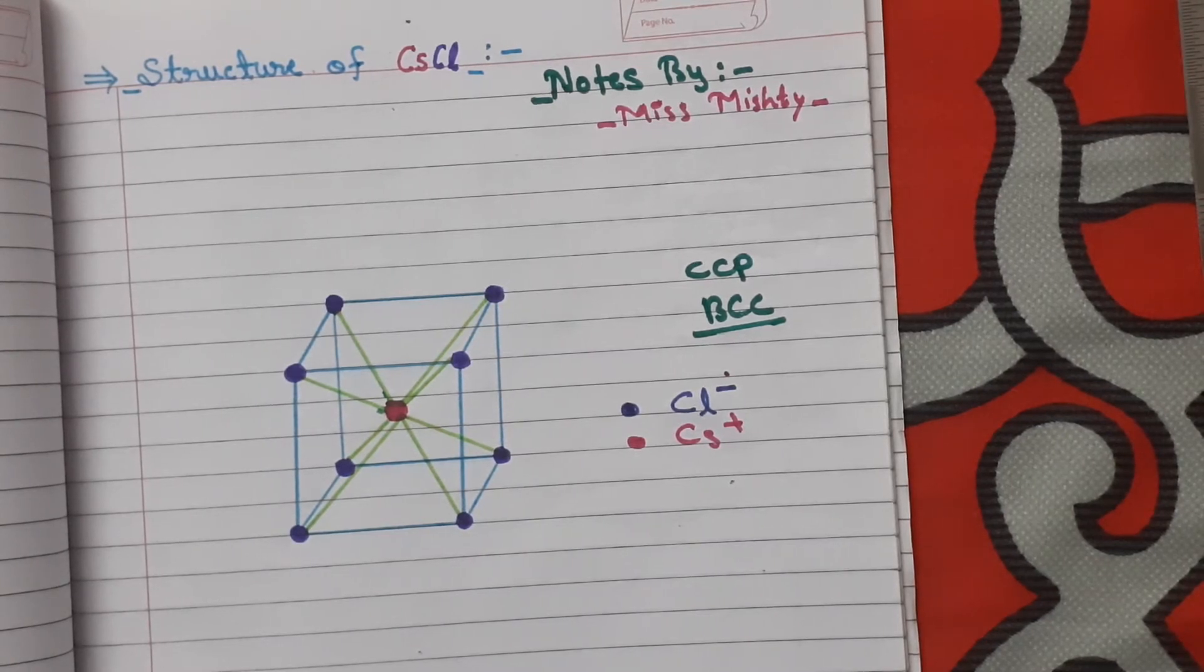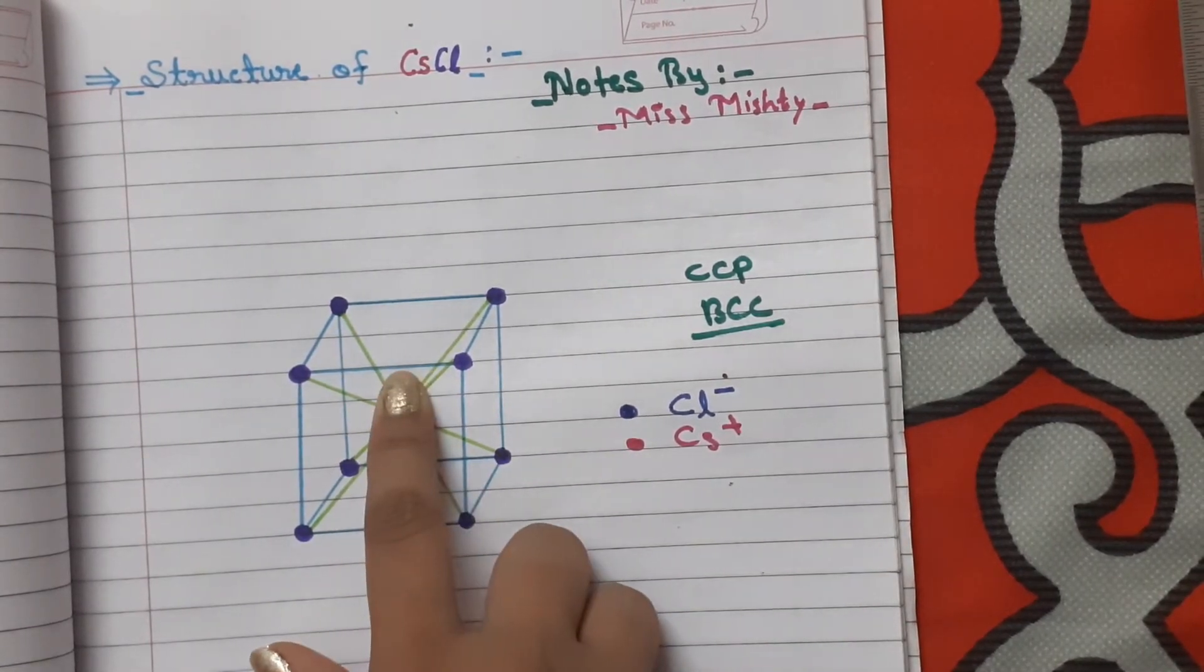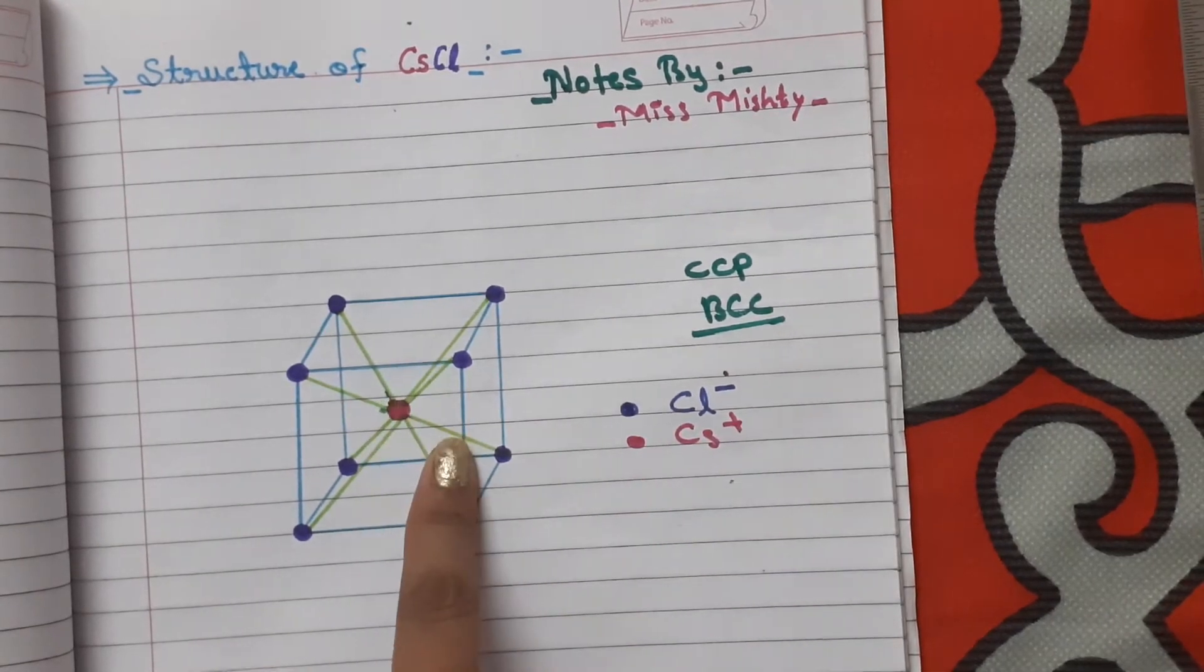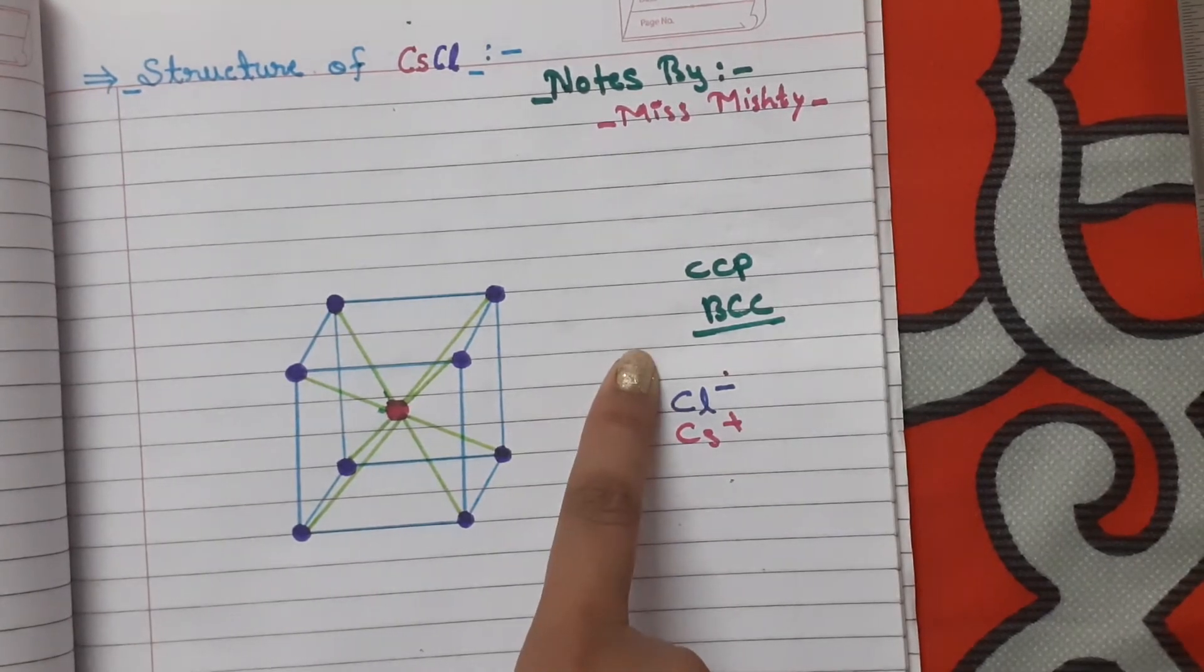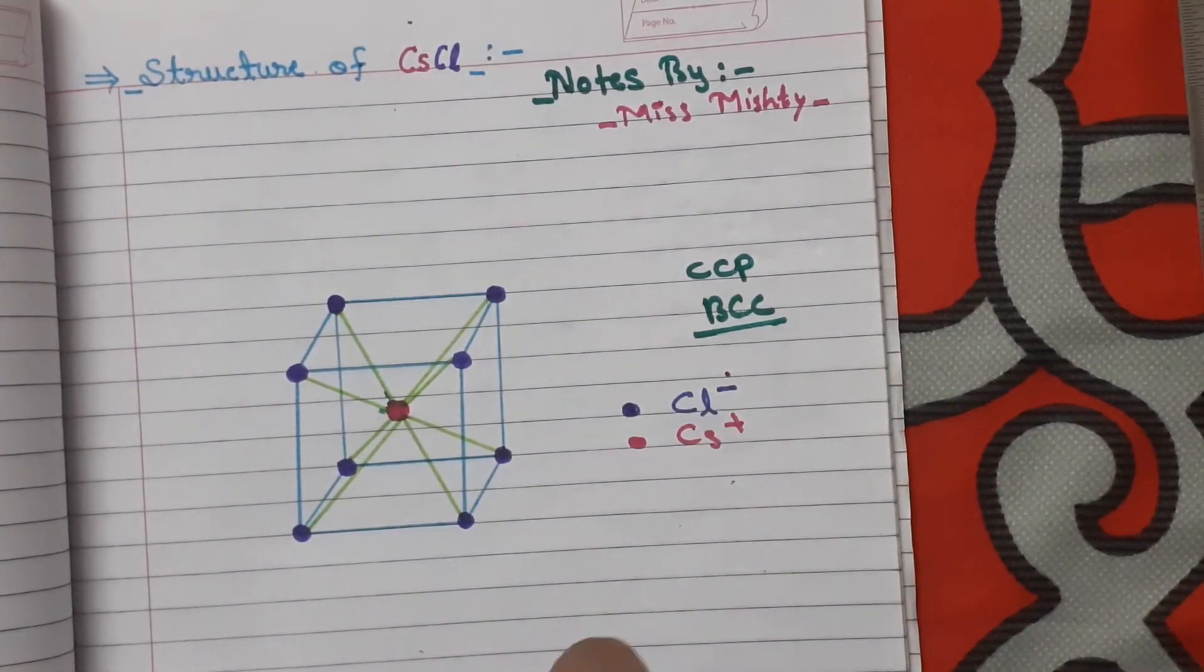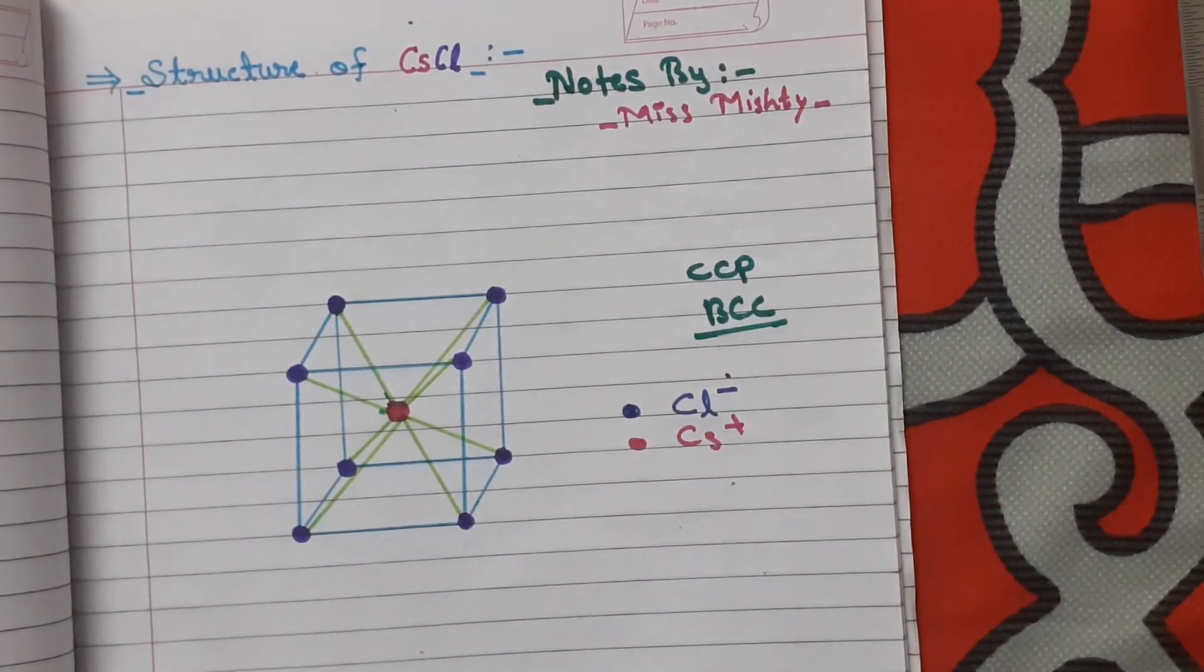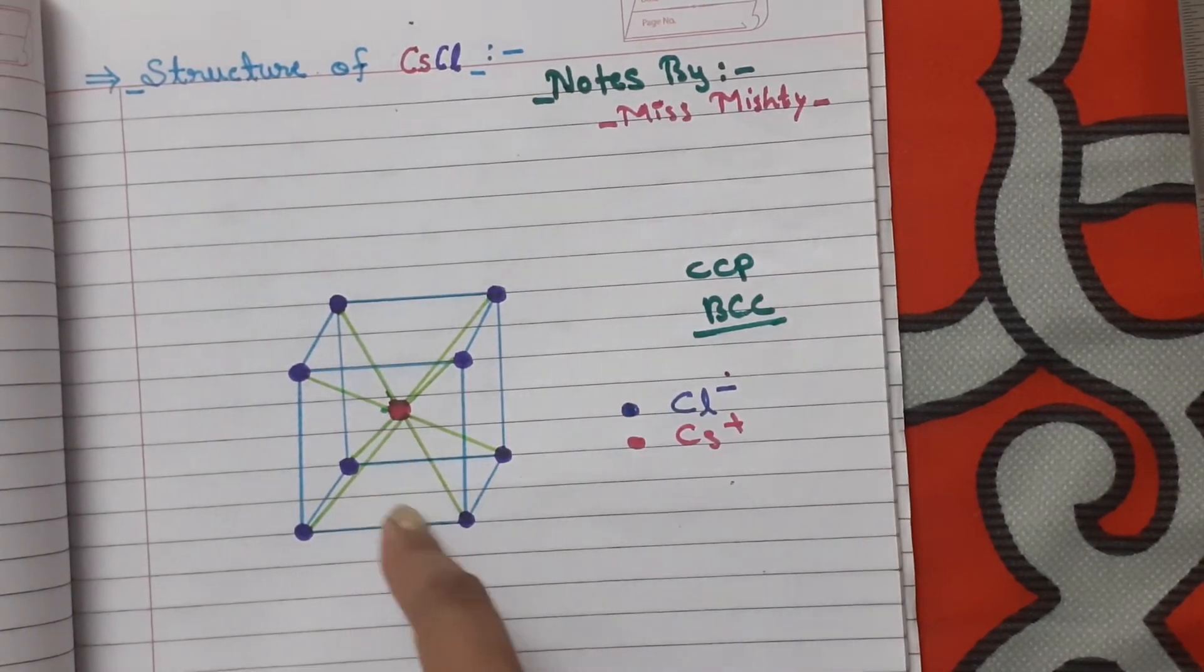So there is a question: why is cesium occupying the body center? The reason behind this is that cesium and chlorine both have sizes which are almost comparable to each other. Cesium size is almost comparable to chlorine ion, that is why it will occupy the body center.